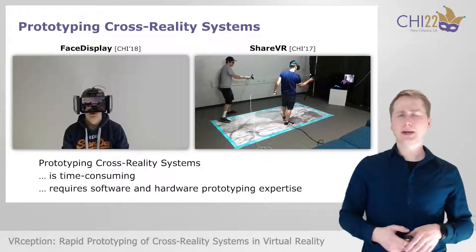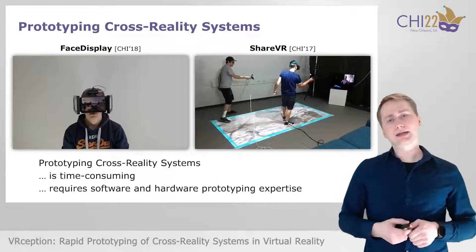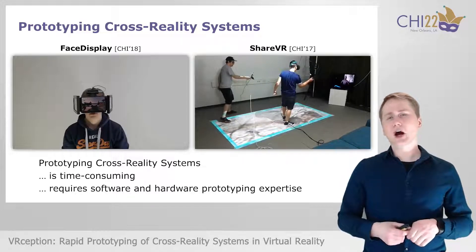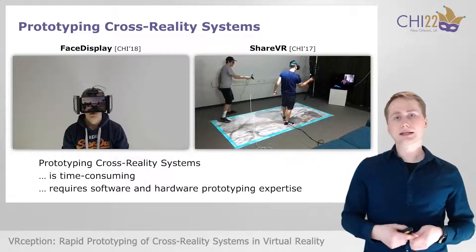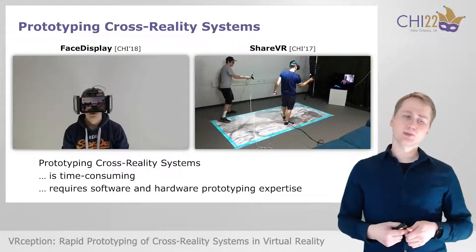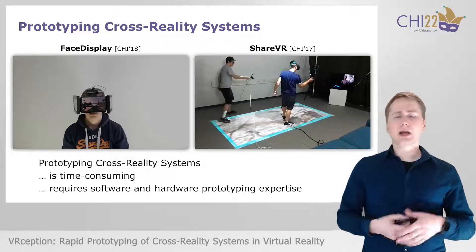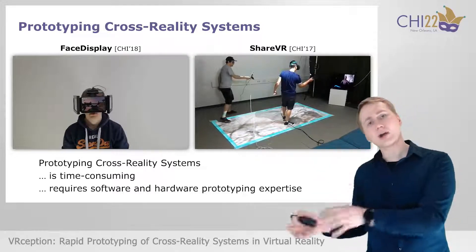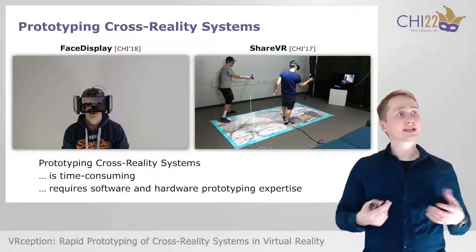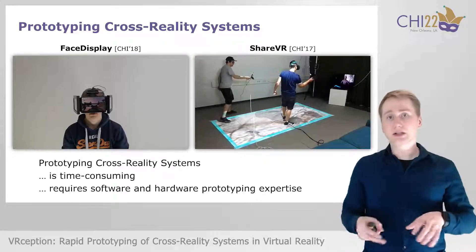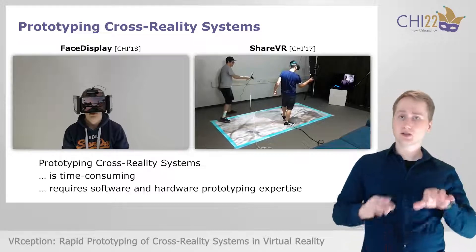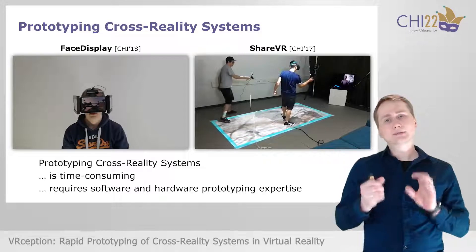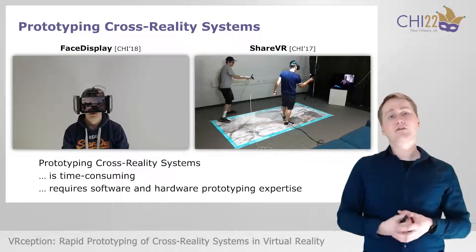Let us start by asking: what is a cross-reality system? At its core, these systems offer different degrees of virtuality to users. This can either be a user who is transitioning from virtual reality to augmented virtuality — for example, to integrate a physical keyboard into the experience to allow typing — or it can be multiple users that experience different levels of virtuality.